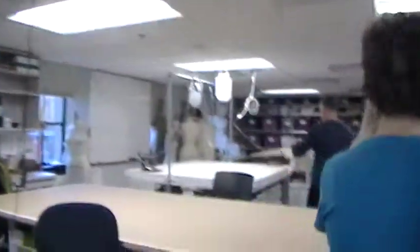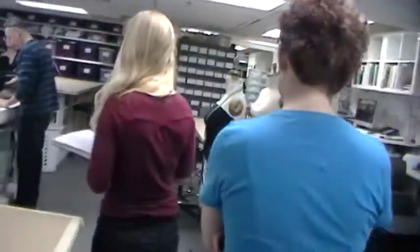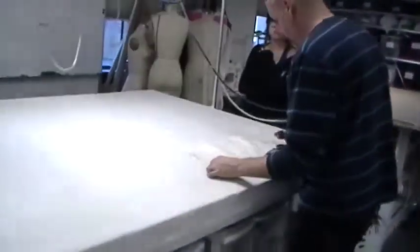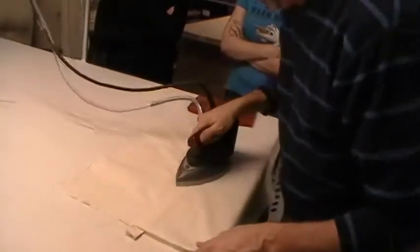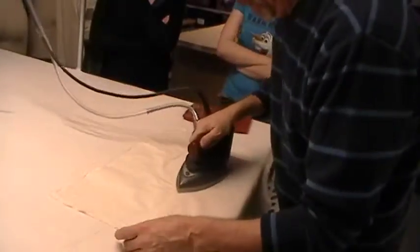So then back to the ironing table, press it again. Notice I'm just pressing the corner. I'm not pressing anything else. Then I put it back in its original orientation or its final orientation, depending upon how you choose to look at it, and pressing it again.